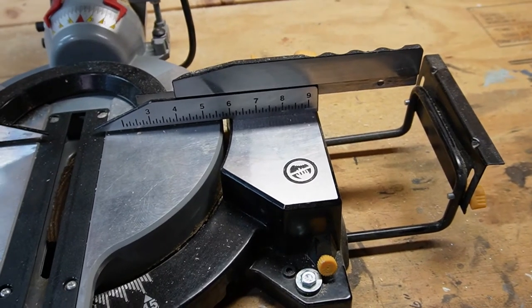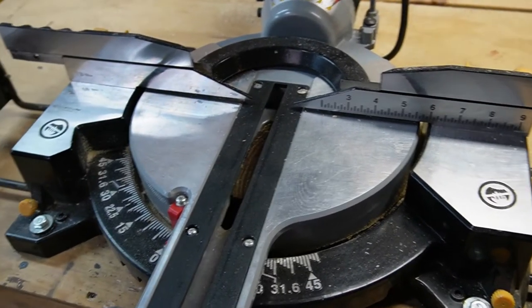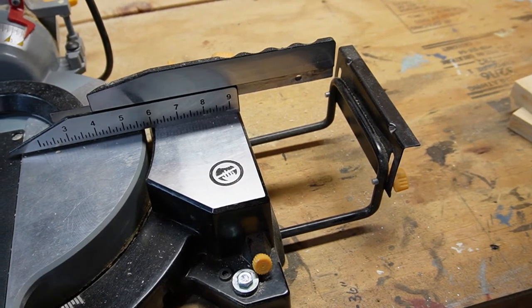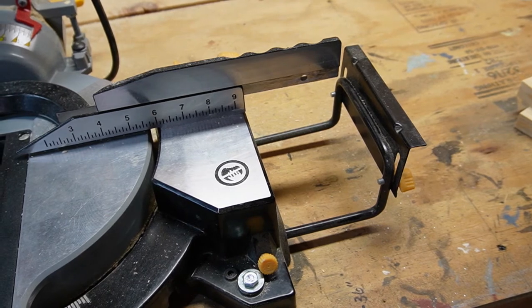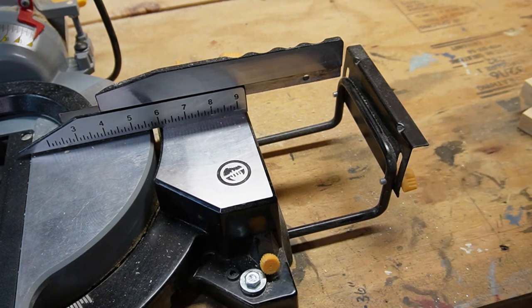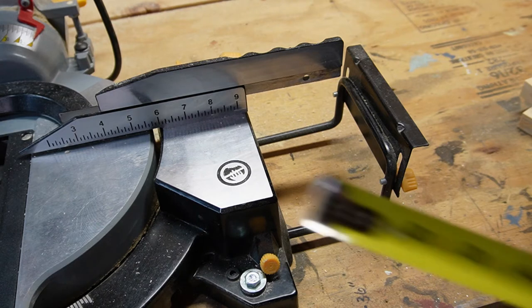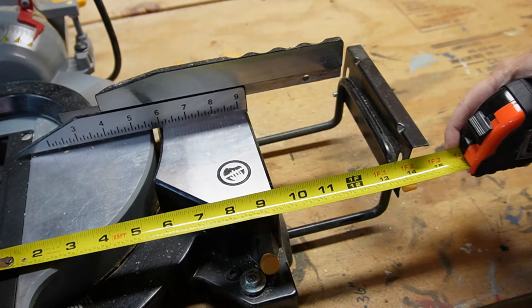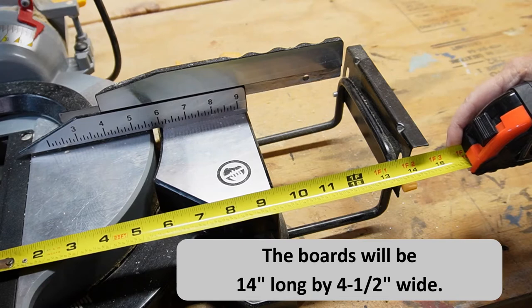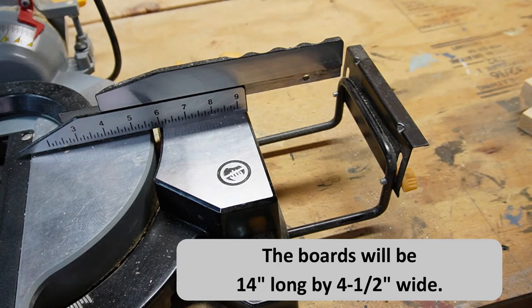So what I need to do is rip my boards so that they're 14 inches exactly. Many of you might know this, but most of these saws come with a guide. So what I did is I set this up so that I wouldn't have to measure each time. So I set it to 14 inches because that is where I need to have my length. So the boards are going to be 14 inches by four and a half inches.